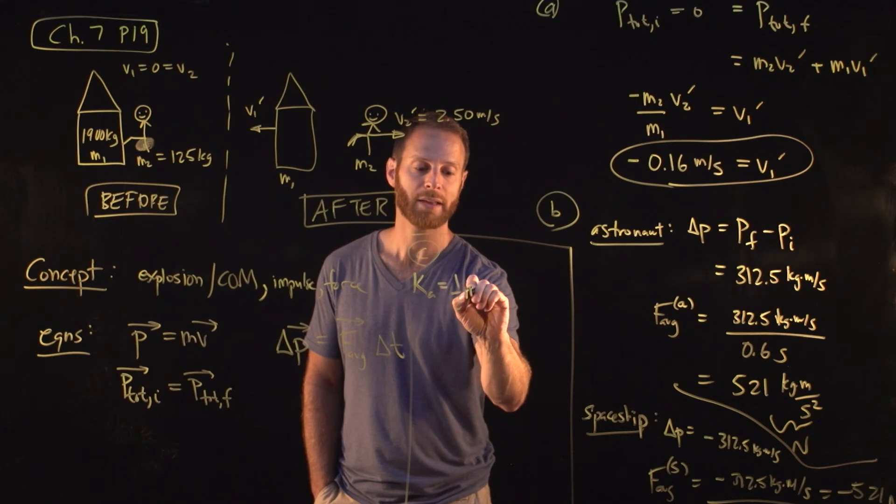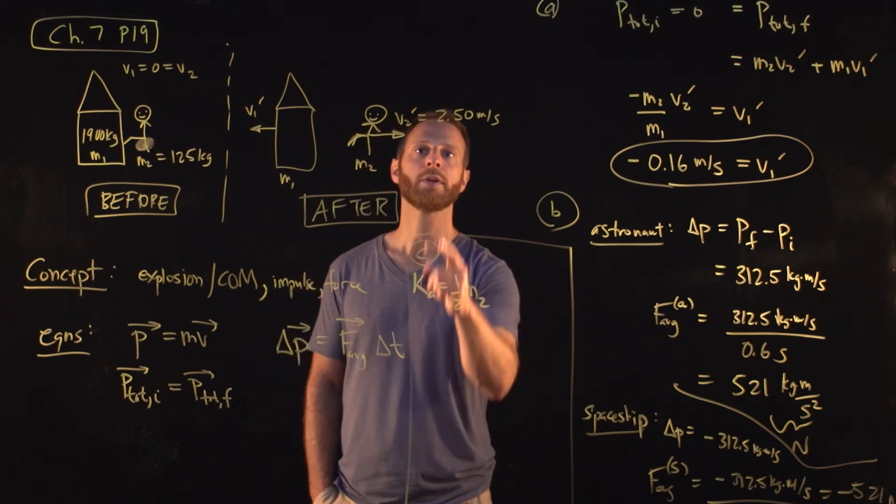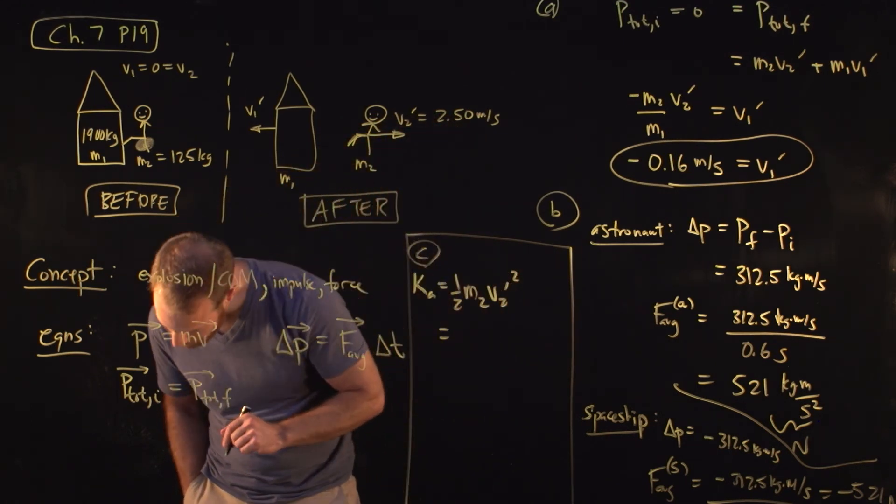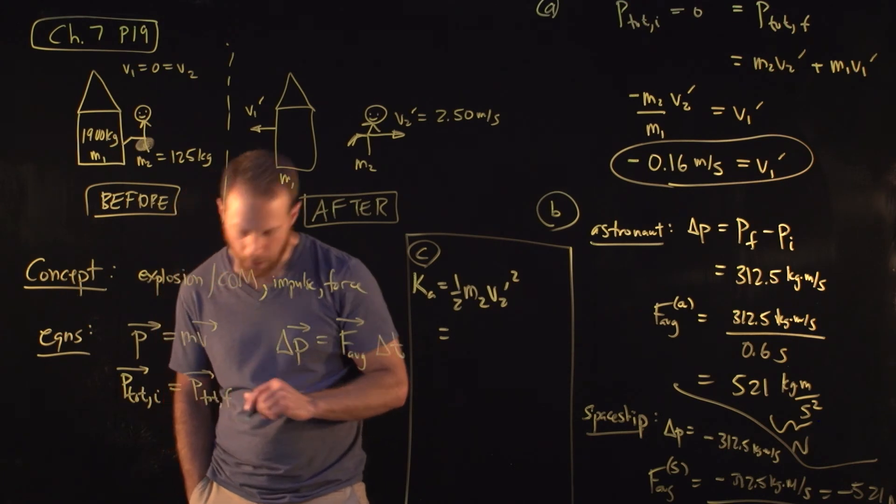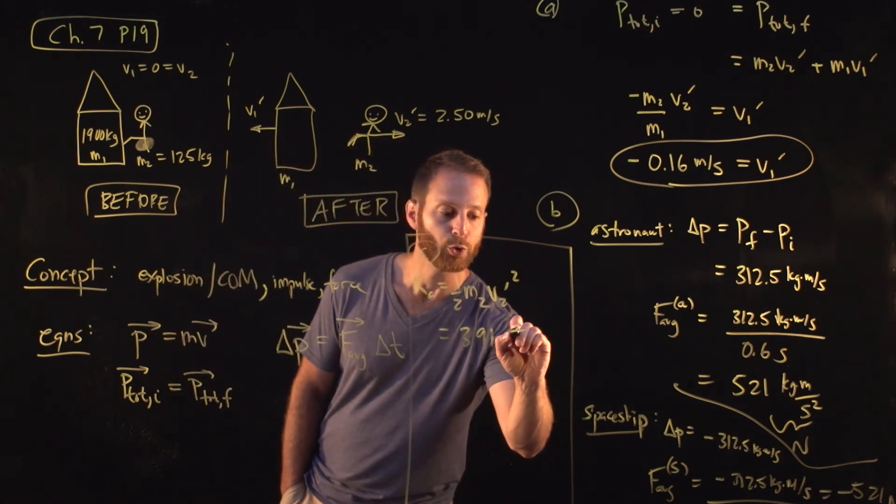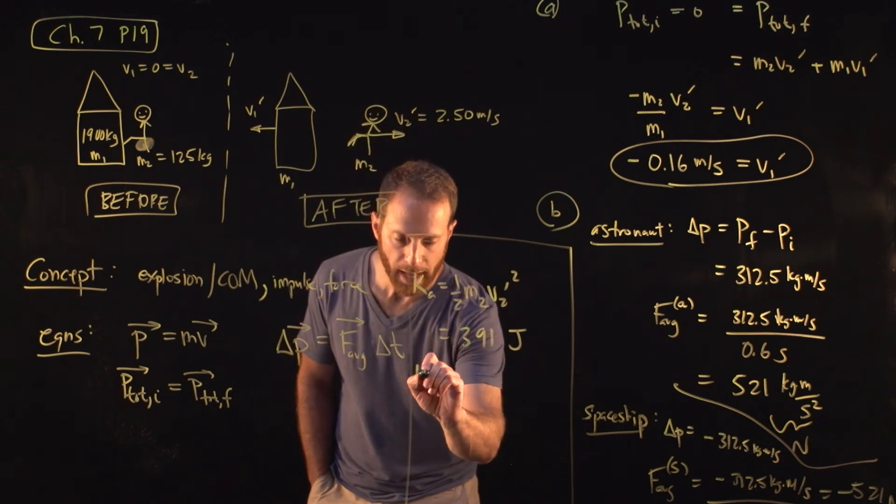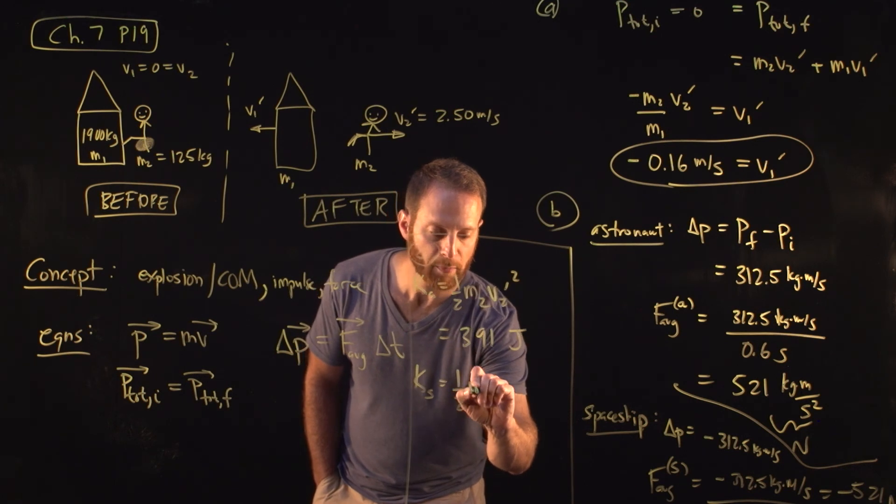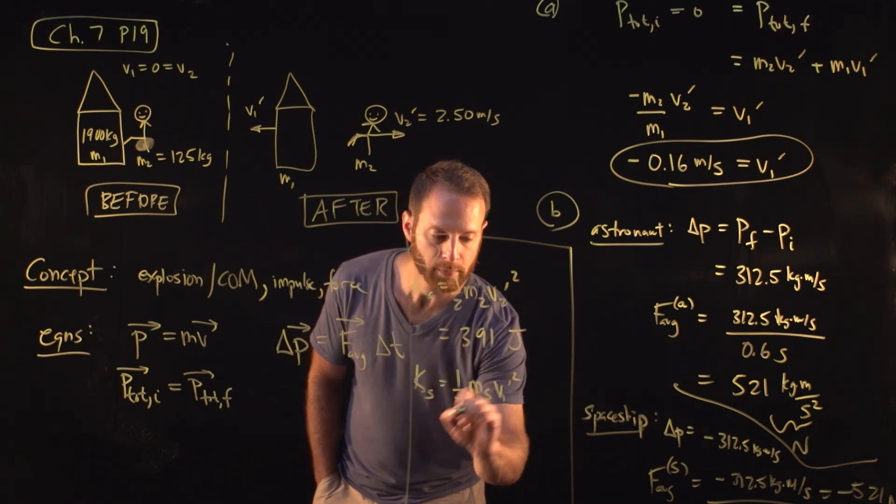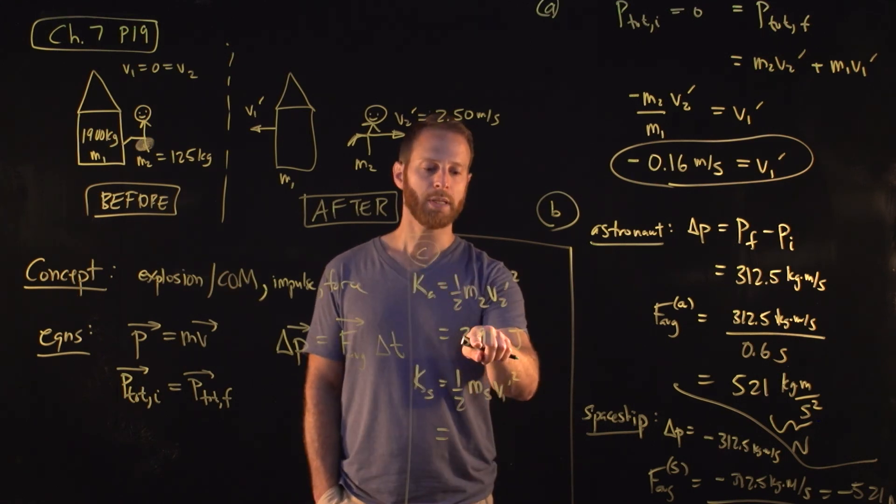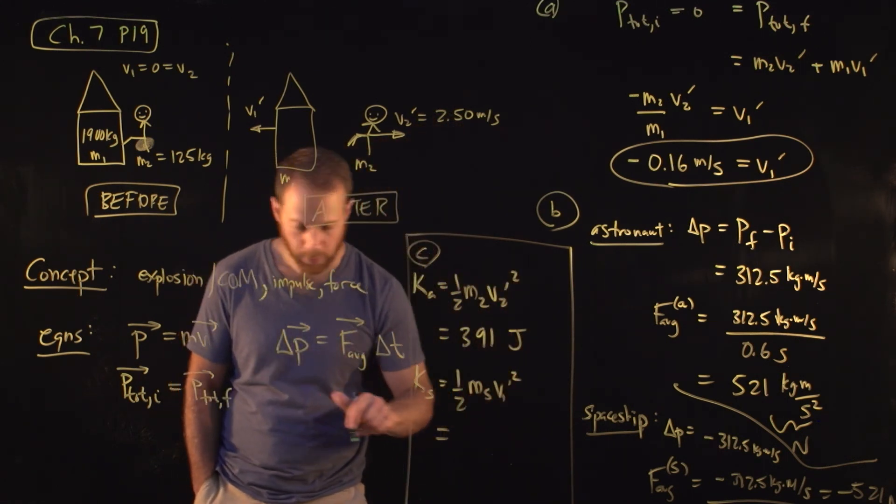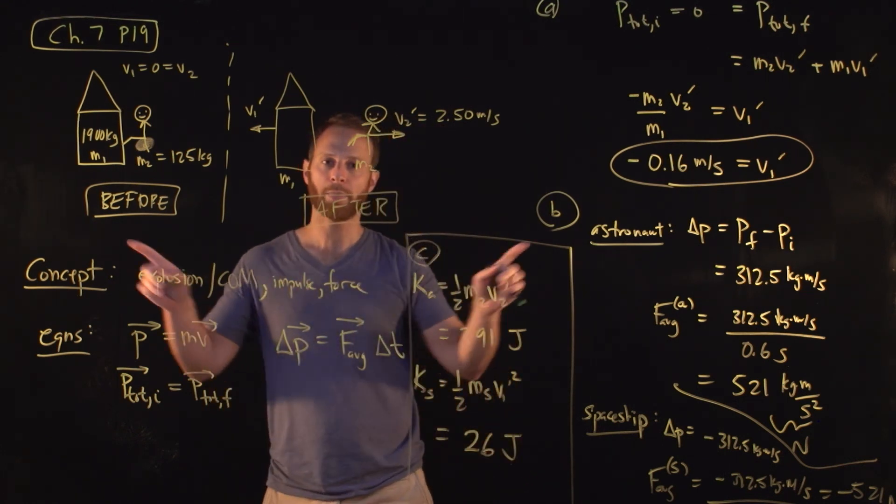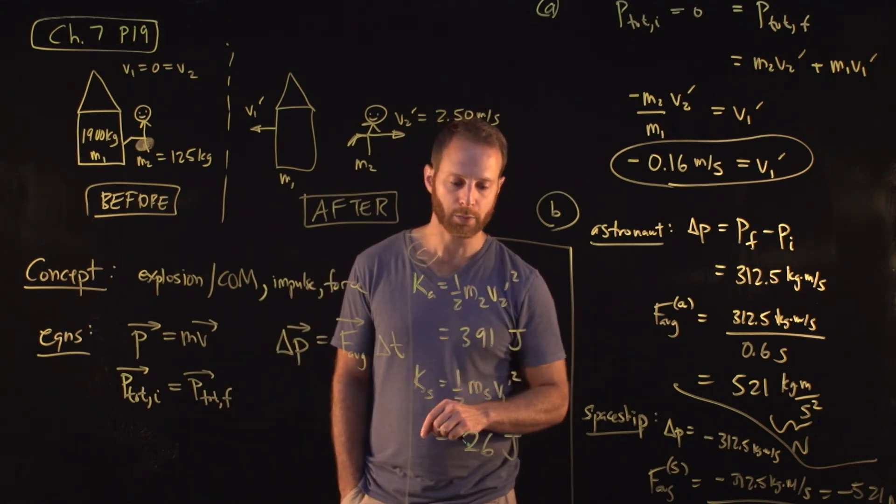This turns out to be, when you plug in all the numbers, approximately 391 joules, because we're dealing with energy. The kinetic energy of the spaceship, it's the same formula, one-half mass of spaceship times V1 prime. In case you have a guess that it should be equal to the kinetic energy of the astronaut, you would be incorrect. It turns out to be only 26 joules. So although they end up with equal and opposite momenta, they do not have equal magnitudes of kinetic energy.